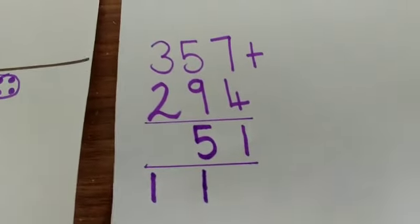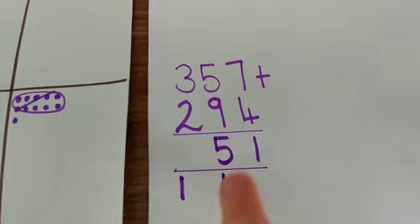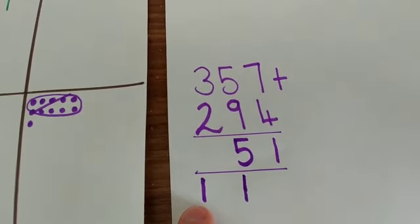Now on my column method, again, I've got my 5 in the 10s answer box. And I've got my 100 underneath ready to add for later.